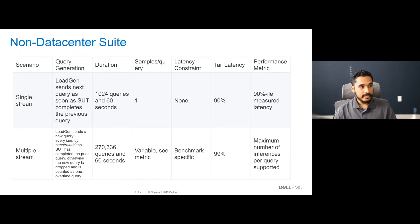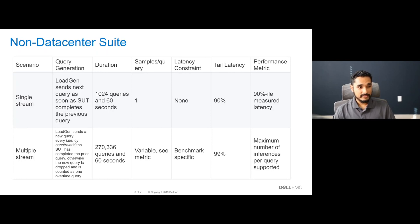In the non-datacenter suite, we have offline, single stream, and multi-stream scenarios. Single stream represents a case with one inference query stream and a sample size of one: we inject a single query, record the completion time when it finishes, and inject the next query. The metric is the 90th percentile measured latency. Multi-stream assesses how many concurrent streams the system can handle — each query comprises multiple inferences — and the metric is the number of streams the system supports while meeting accuracy requirements.